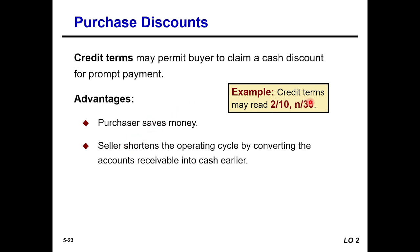Purchase discounts: credit terms may permit the buyer to claim a cash discount for prompt payment. Example: terms 2/10 net 30. The advantages are: number one, the purchaser saves money. Number two, the seller shortens the operating cycle by converting accounts receivable into cash earlier — collecting cash as early as possible benefits the seller.